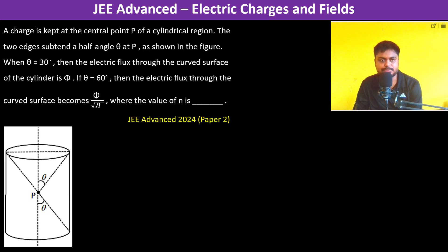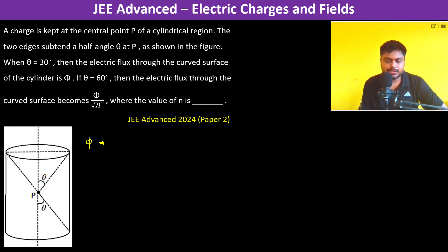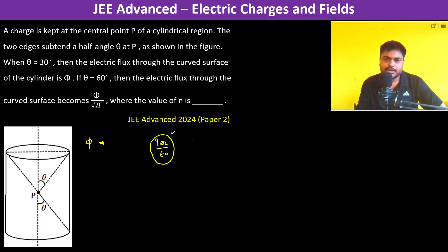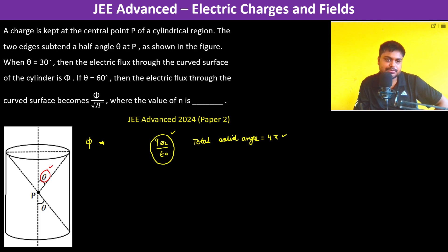The charge is at the central point of a cylindrical region. The two edges subtend a half angle theta at point P as shown in the figure. When theta equals 30 degrees, we need to find the electric flux through the curved surface of the cylinder. The total flux is Q enclosed divided by epsilon naught, and the total solid angle subtended is 4 pi. The flux through the curved surface can be calculated using this approach.